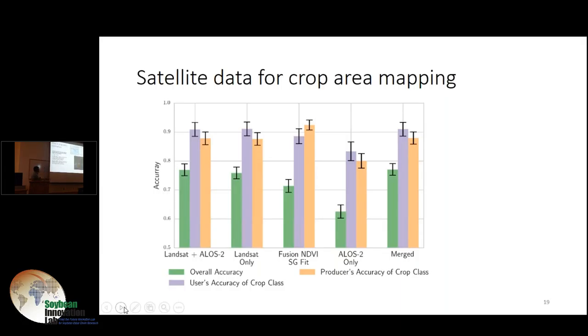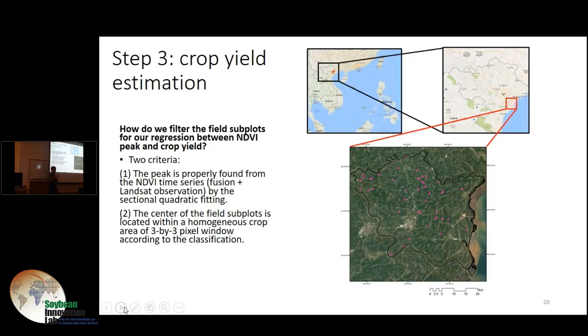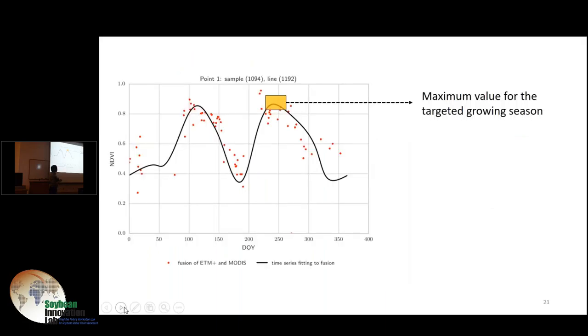We also use ALOS data to do similar things using different categories. The best category is using time series of NDVI data. For crop, which is this red color, we have pretty high performance. Using ALOS data has lower performance. It seems the ALOS data is not really helping. These are the sites we do. The Asian Development Bank and the Vietnam government did extensive surveys at these locations for multiple sites.